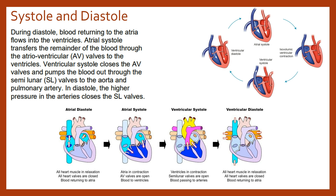Now the blood is in the vessels, which means the pressure in the ventricles will drop, the semi-lunar valves will close, and the blood will travel to the lungs and to the rest of the body, allowing the heart to go back into cardiac diastole, the atria to start refilling with blood, and we repeat this cycle over and over again.